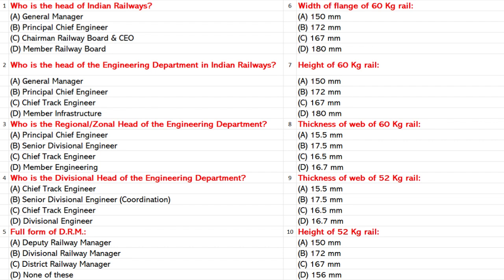Who is the Divisional Head of the Engineering Department? A. Chief Track Engineer. B. Senior Divisional Engineer Coordination. C. Chief Track Engineer. D. Divisional Engineer. Answer: B. Senior Divisional Engineer Coordination.